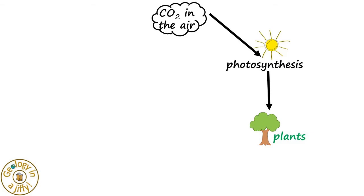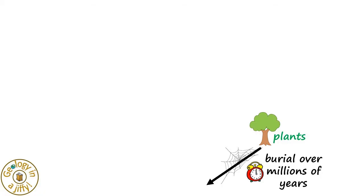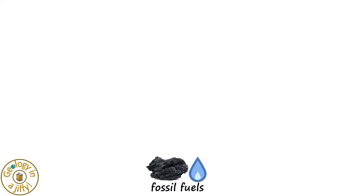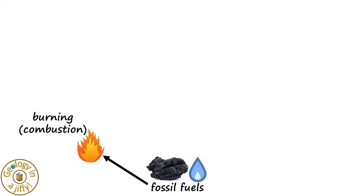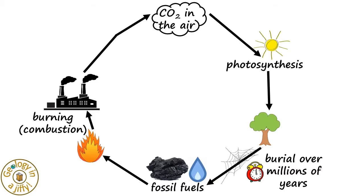Using sunlight, in the process of photosynthesis, plants absorb carbon dioxide. After death, plants can undergo burial, which, over millions of years, can compact to form fossil fuels, which we burn for heat and light. By burning them, in the process of combustion, maybe in a factory or a car, this in turn releases carbon dioxide back into the air, so completely cycling the carbon atoms.